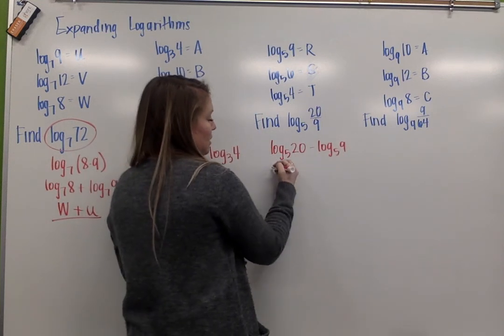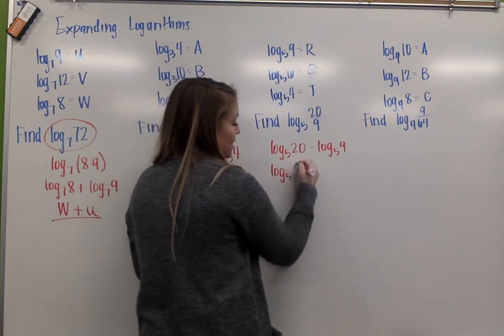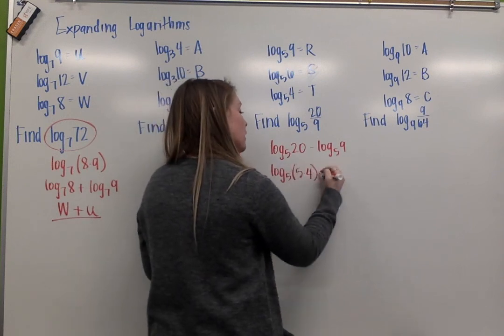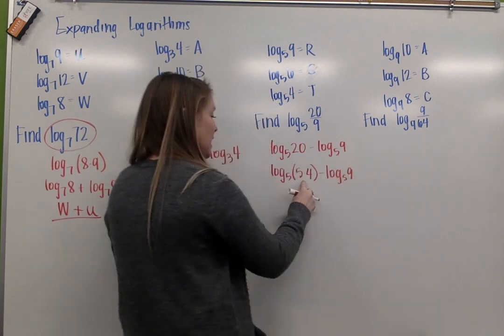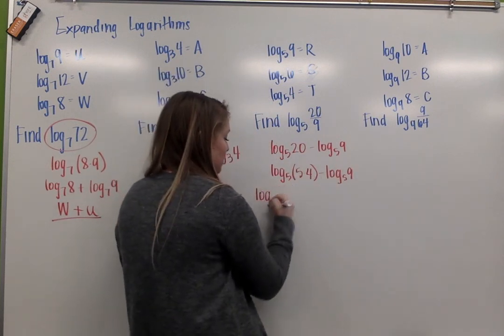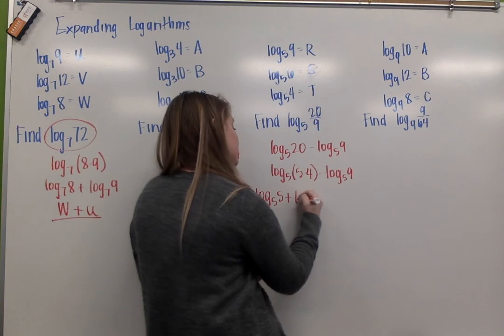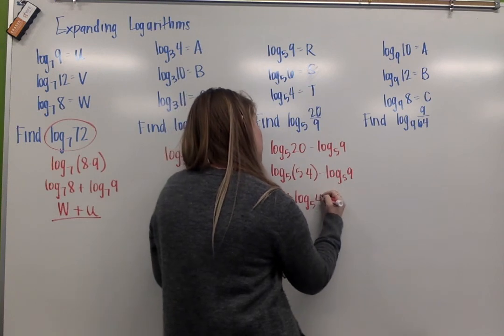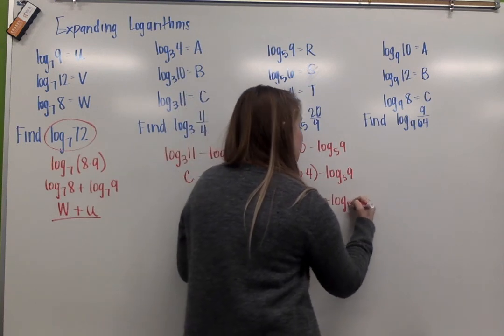20, I can rewrite that as 5 times 4, so I can expand that using addition. Log base 5 of 5 plus log base 5 of 4 minus log base 5 of 9.